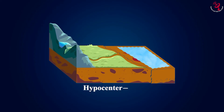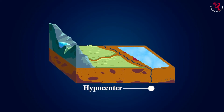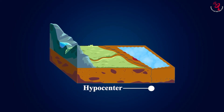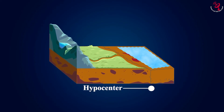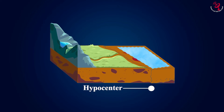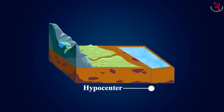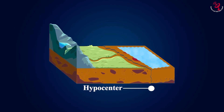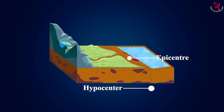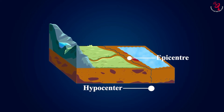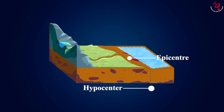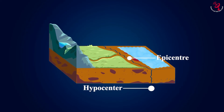Hypocenters and epicenters. The starting place of an earthquake is known as a hypocenter, and it is below the surface of the Earth. A place directly above the hypocenter is called epicenter, where the strength of an earthquake is strongest.